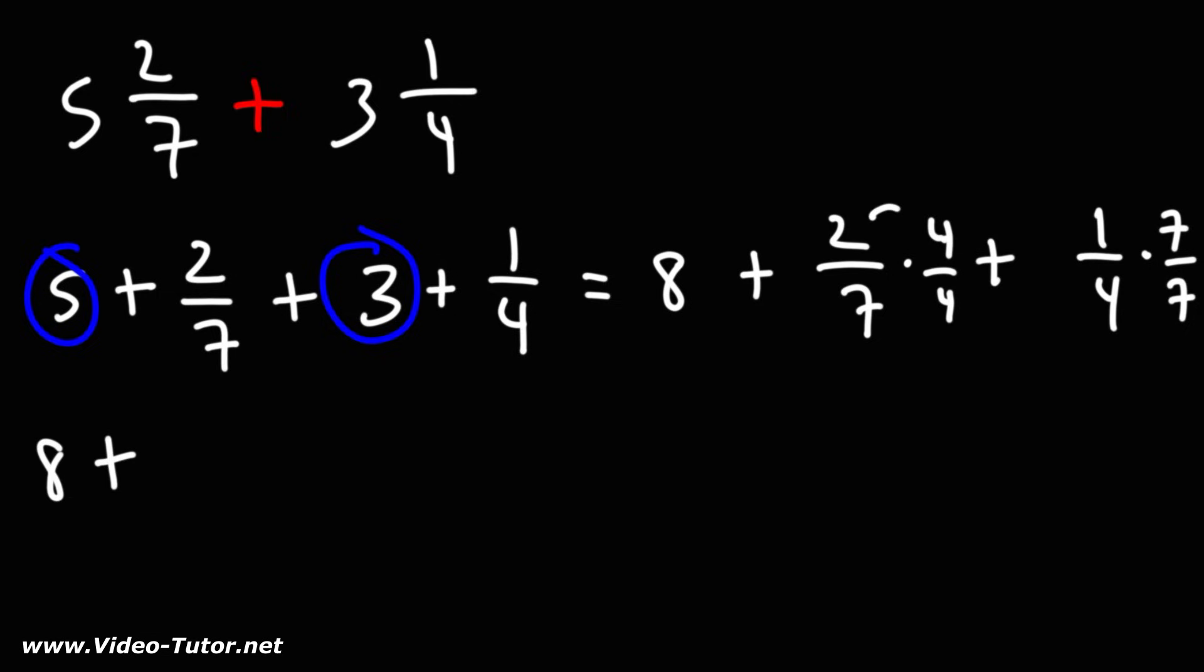So now we can multiply across. Two times four is eight, seven times four is twenty-eight. One times seven is seven, four times seven is twenty-eight.